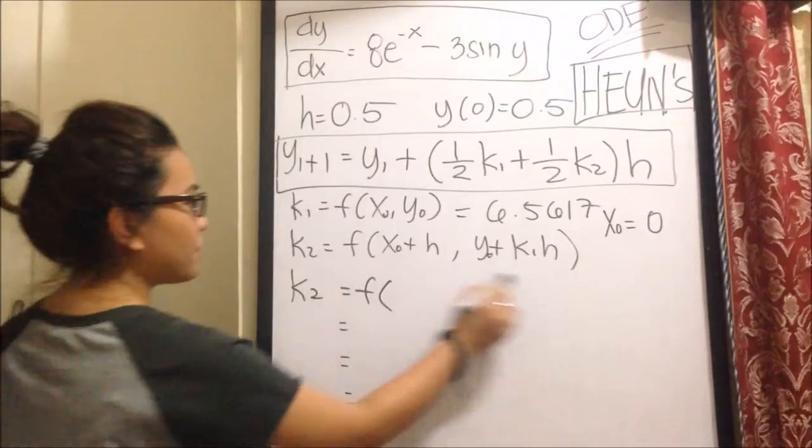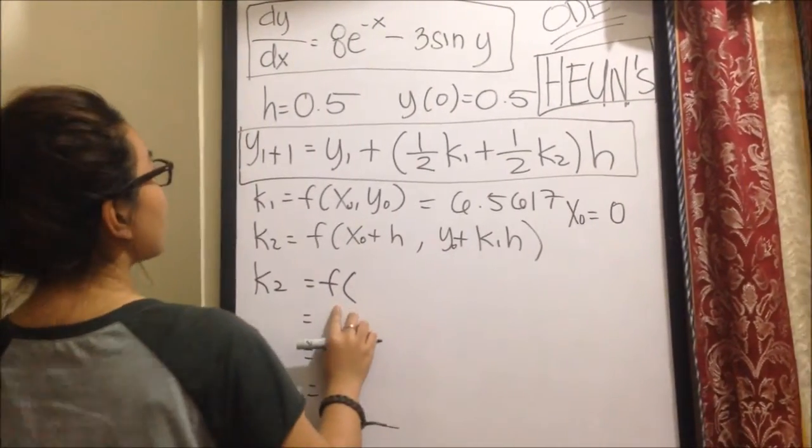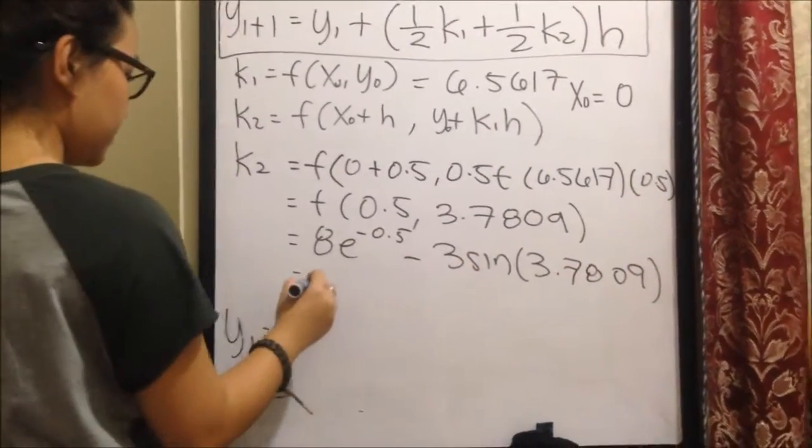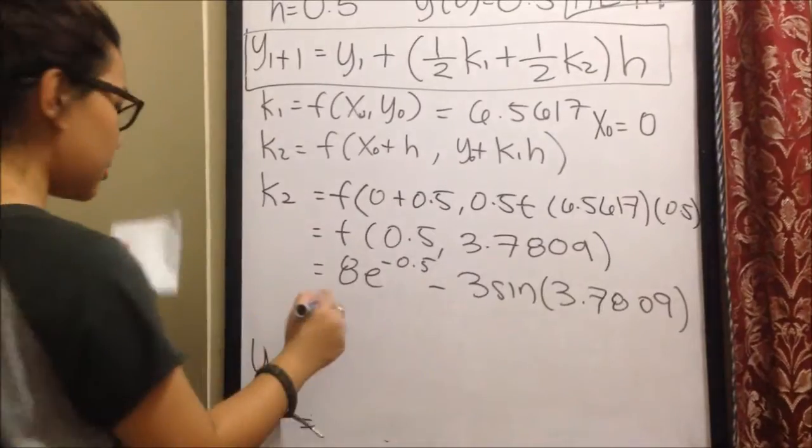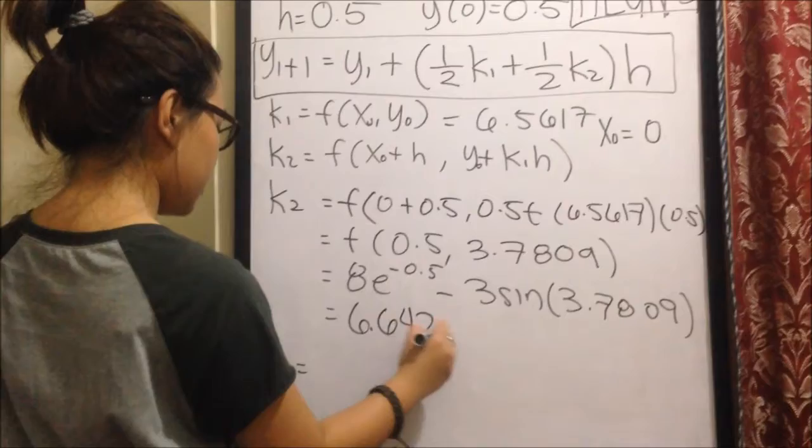So, we have the formula here. K2 is equal to the function of... So, the value for K2 is 6.642.